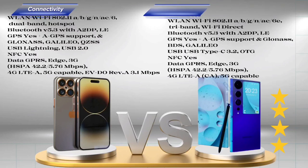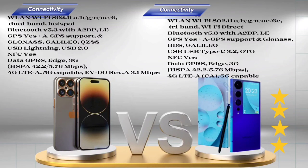Samsung Galaxy S23 Ultra connectivity: Wi-Fi 802.11 a/b/g/n/ac/6E, tri-band, Wi-Fi Direct. Bluetooth v5.3 with A2DP. GPS with A-GPS support, GLONASS, BDS, Galileo. USB: Type-C 3.2, OTG. NFC. Data: GPRS, Edge, 3G HSPA 42.2/5.76 Mbps, 4G LTE, 5G capable.